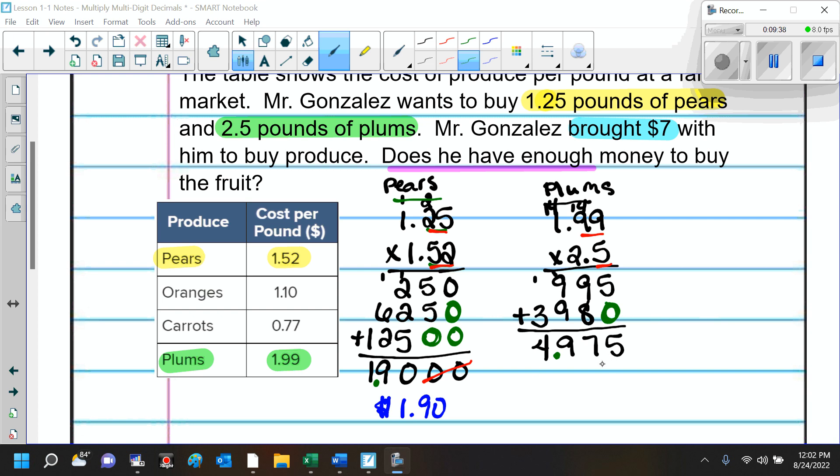We're not going to round this right here because money stops right there. But, we're going to round at the end. So, now, this is the cost for pears. This is the cost for plums. What do I have to do next? You have to add them together. Very good.